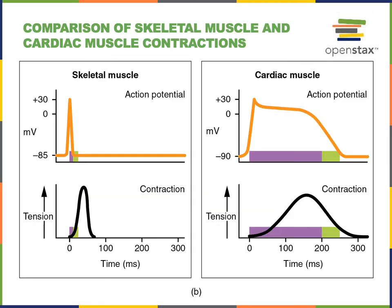Here we see a comparison of the time course of the action potential and contraction in skeletal muscle versus cardiac muscle. In skeletal muscle, the action potential lasts about 2 milliseconds and the duration of a twitch is around 50 milliseconds, so we can have a high frequency of action potentials stimulating summation of twitches. However, in cardiac muscle the action potential duration is much longer, around 200 milliseconds, and this prevents summation.